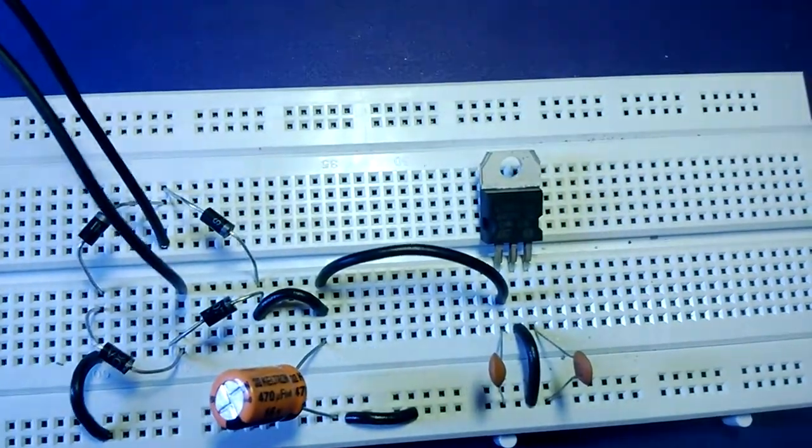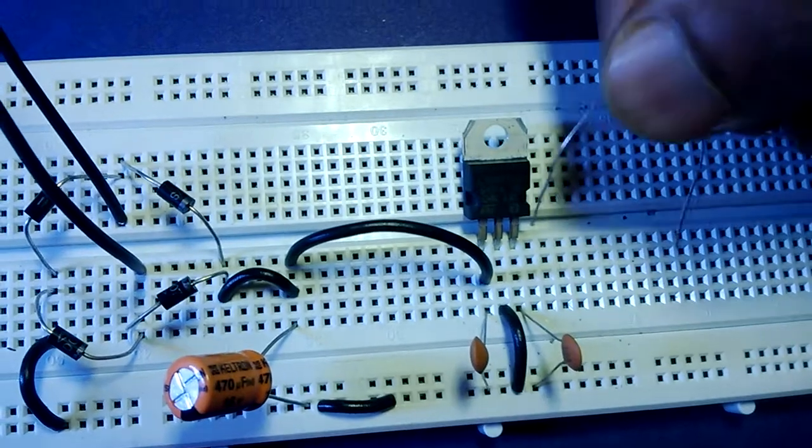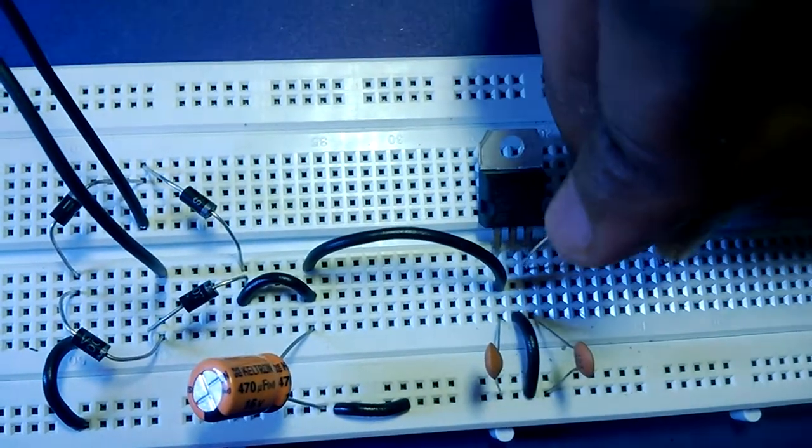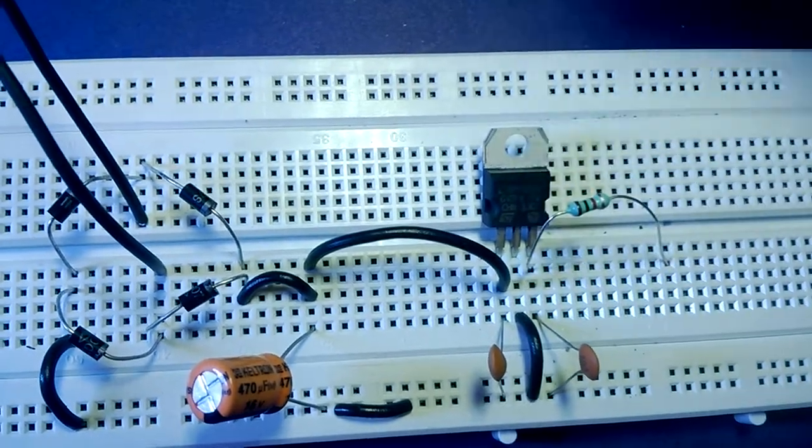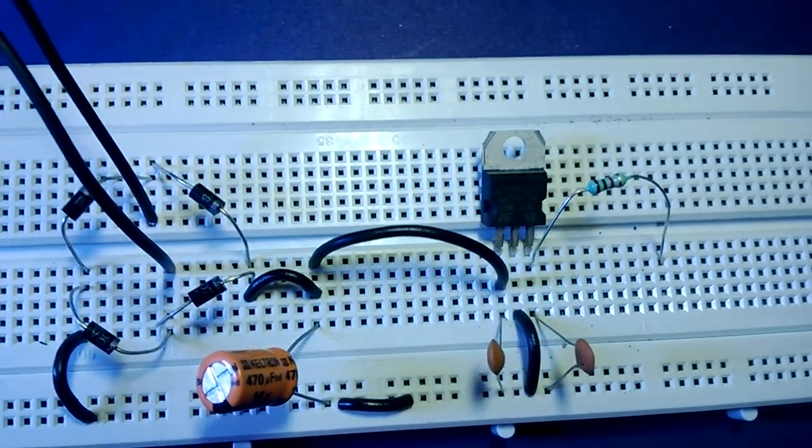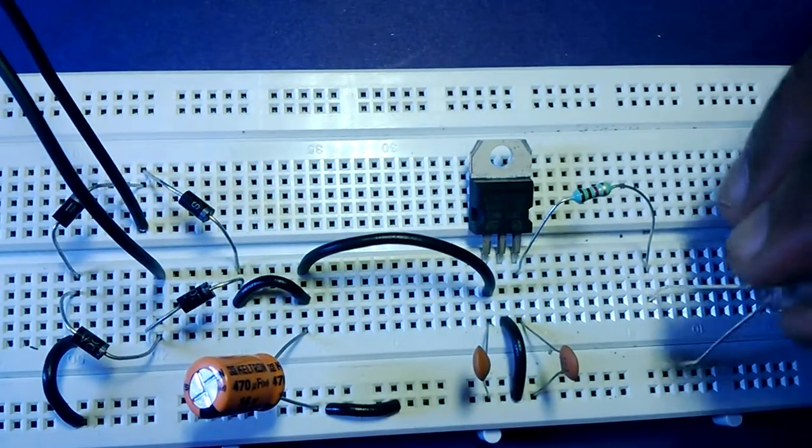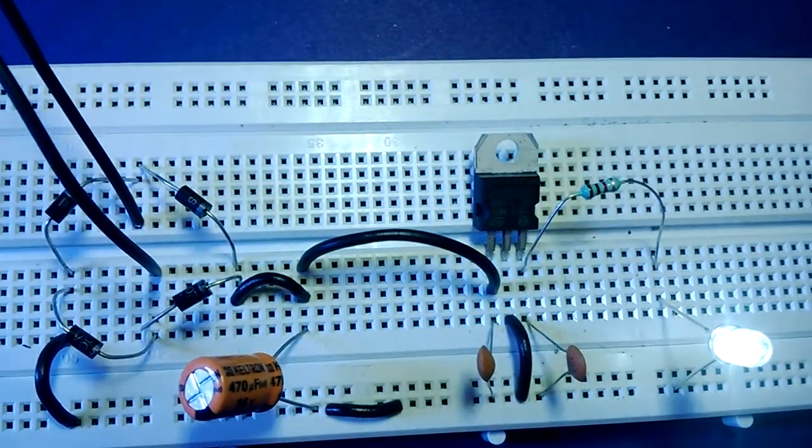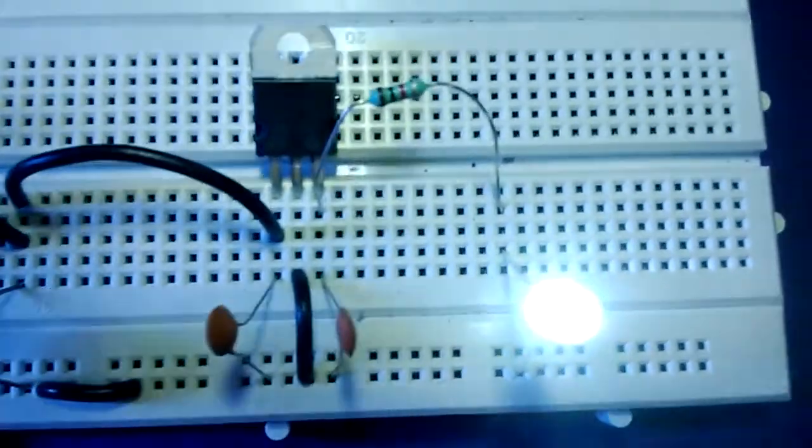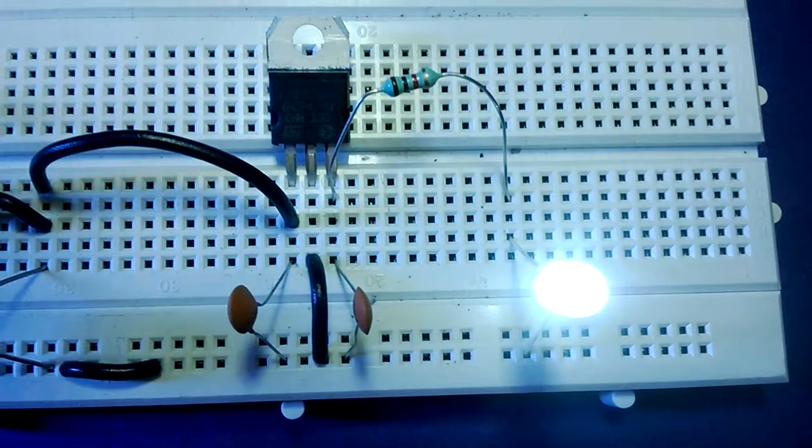We can check the output here. We are placing a resistance out here. Next, we will put an LED with it. You can see the LED is glowing. It means the output voltage is coming.